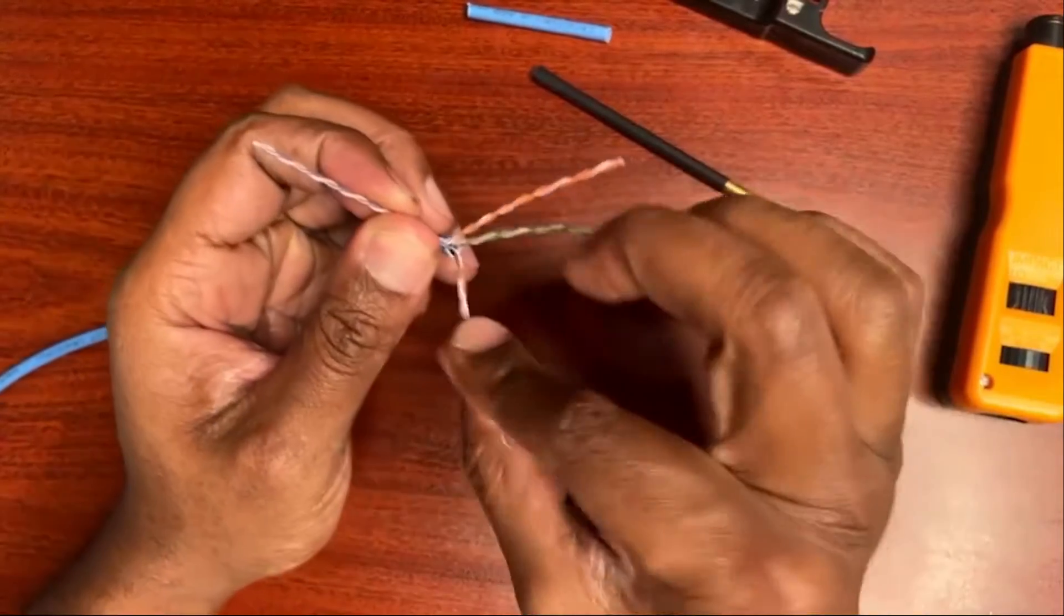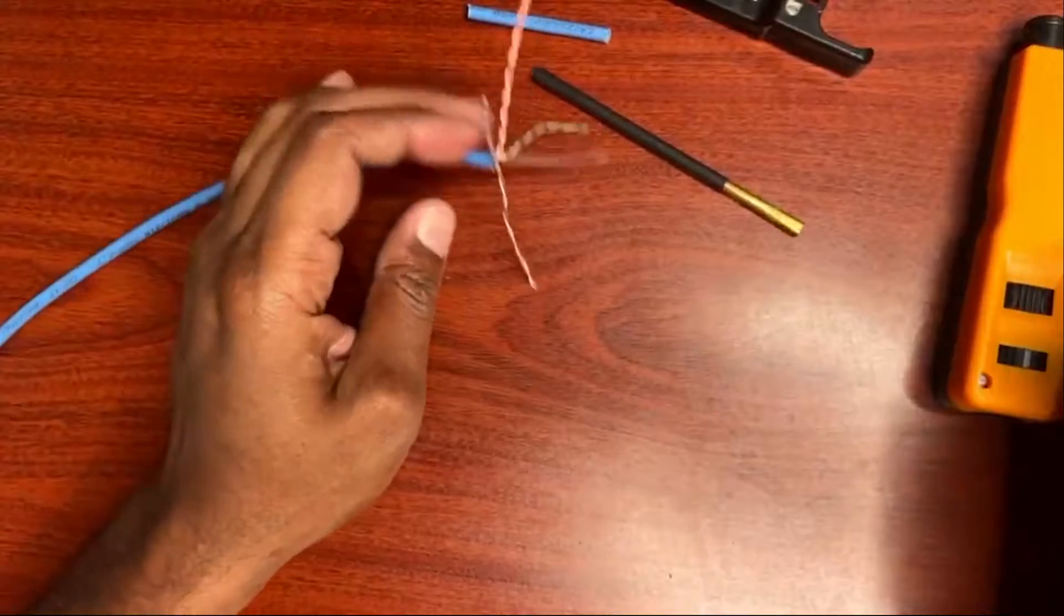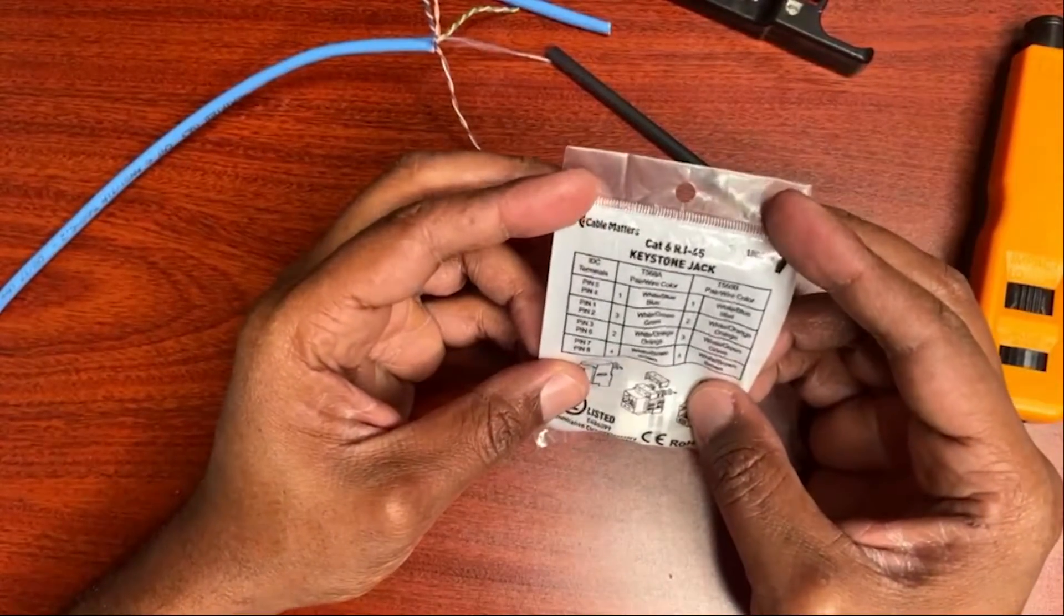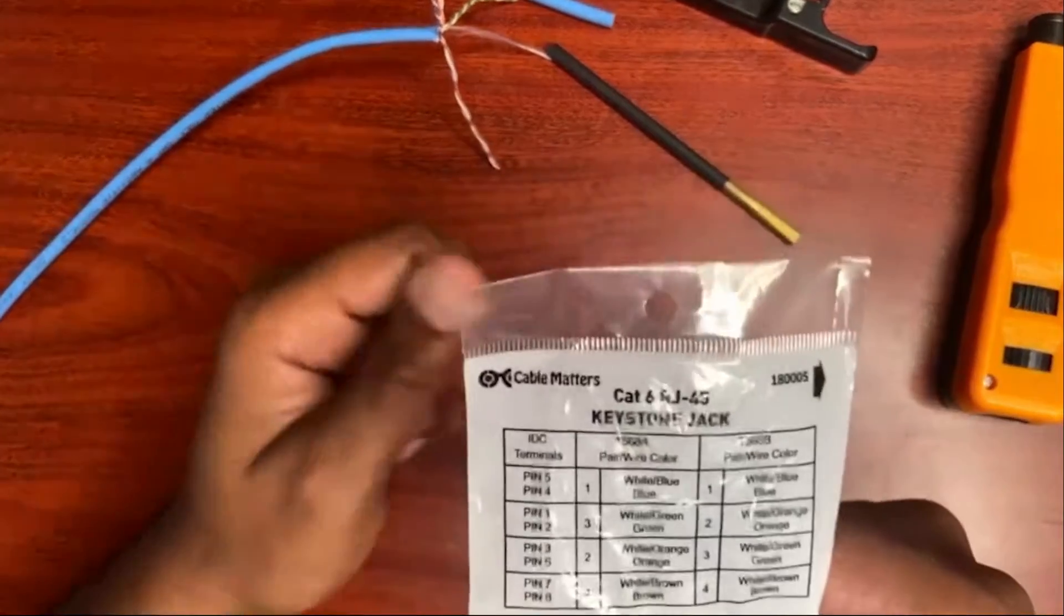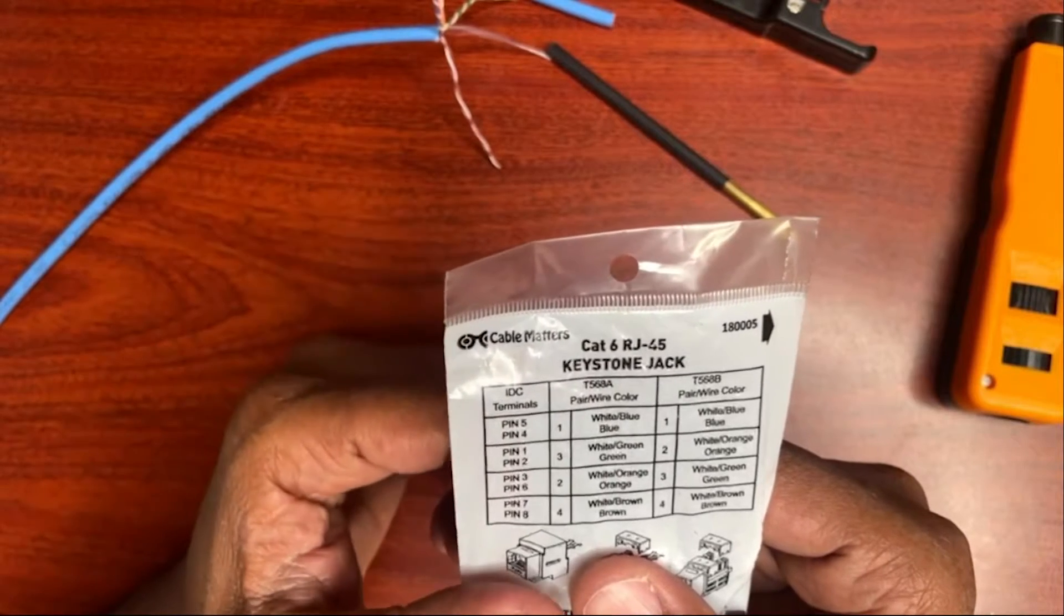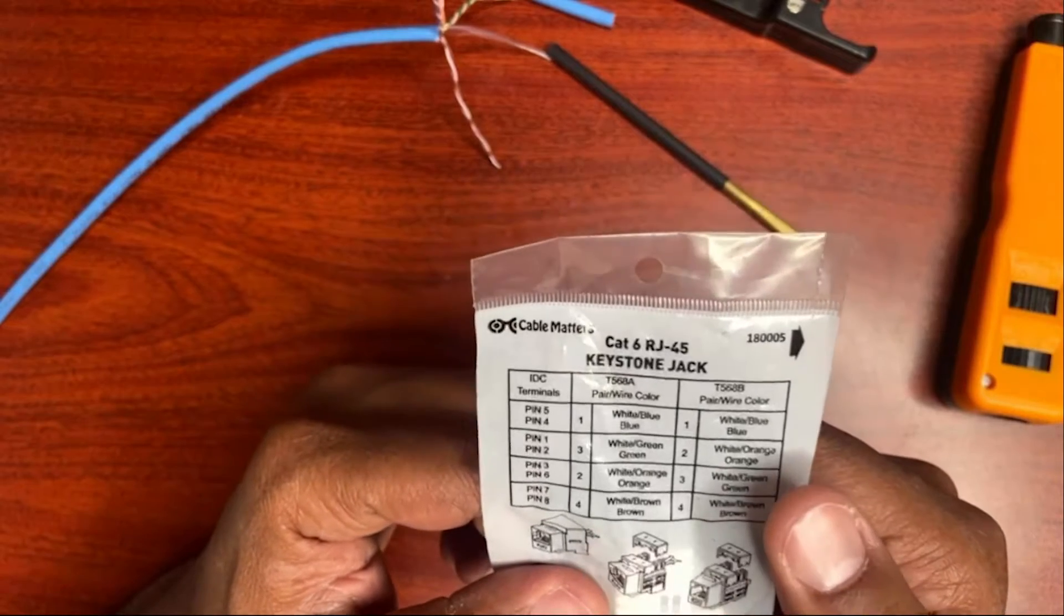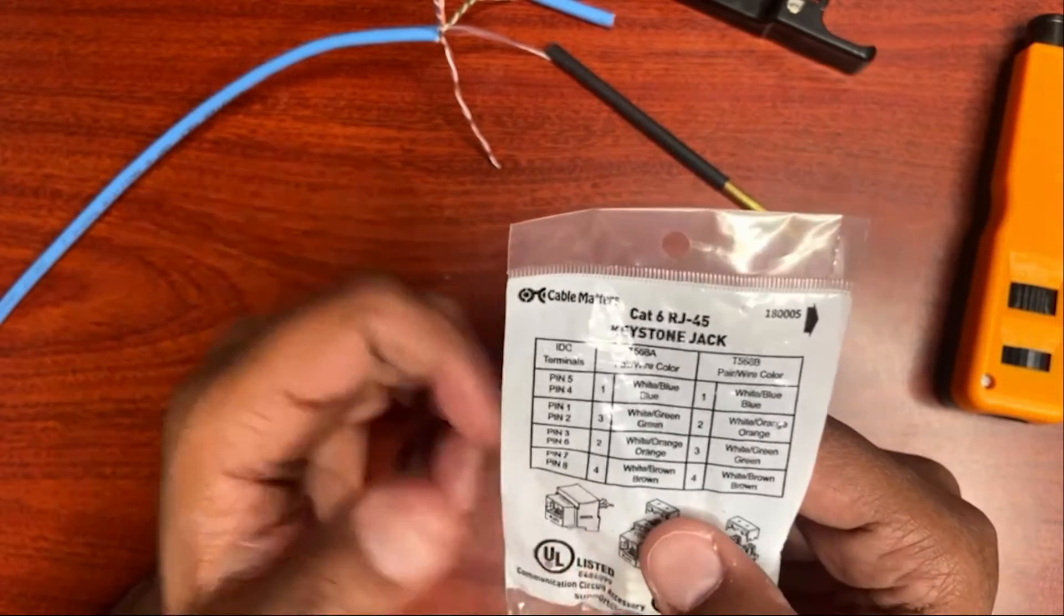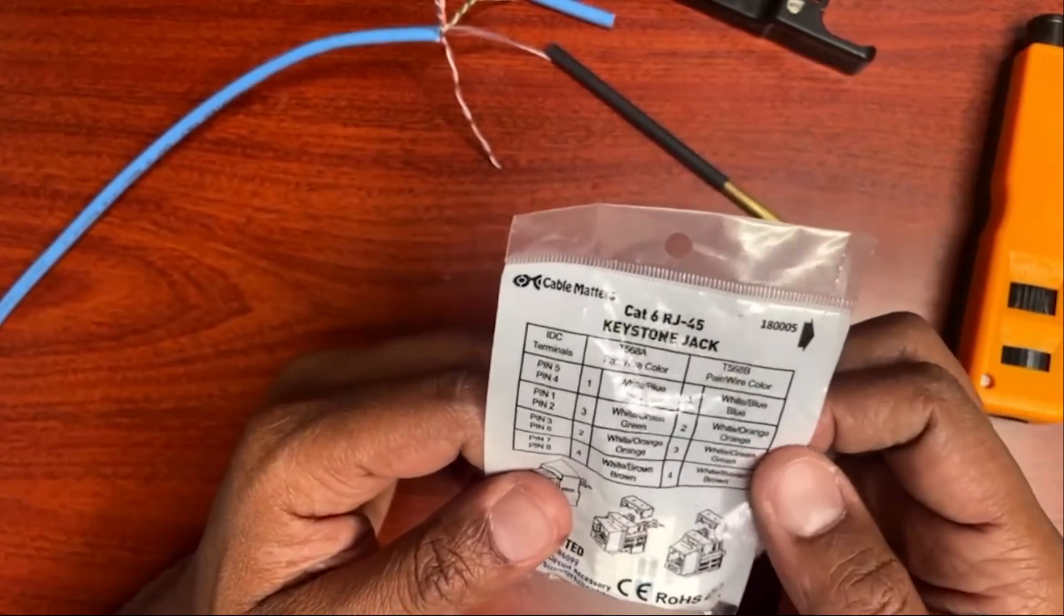Now that that's broken, I'm going to spread out the different pairs of cable here. I want to look at my keystone jack. On the keystone jack you have two sides: T568A and T568B. The side I'm going to be using is my B side here. Depending on how your connections are going to be terminated, it's going to determine which side you're going to use.